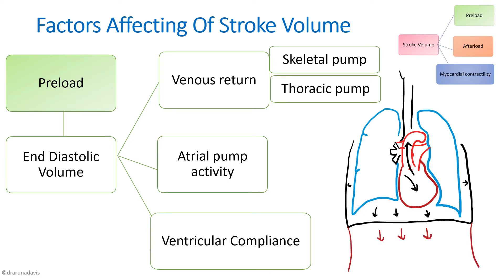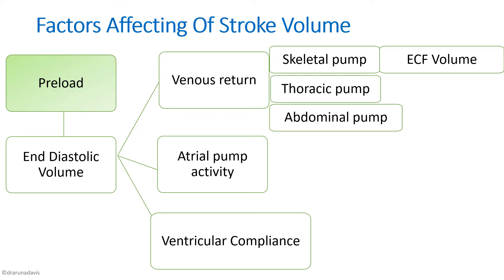The abdominal pump mechanism works when descent of the diaphragm during inspiration increases abdominal pressure, pushing blood toward the heart and increasing venous return and stroke volume. ECF volume also affects venous return — conditions like vomiting and diarrhea decrease ECF volume, leading to decreased venous return and cardiac output, whereas pregnancy increases ECF volume and ultimately increases cardiac output.